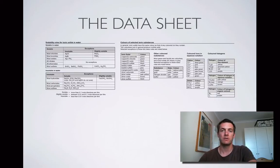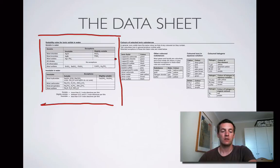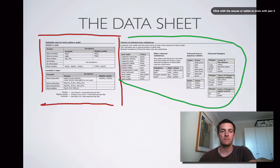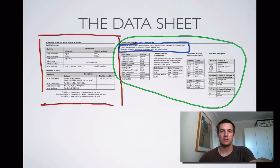Here is the part of the datasheet we're actually going to be using. We've got the solubility rules over here, which you've hopefully been using quite a lot, and over this side you've got the colours of different substances. What's quite important here, although it's not included in a table, is this information: in general, ionic solids have the same colour as that of any coloured ion they contain, and here are the coloured ions.